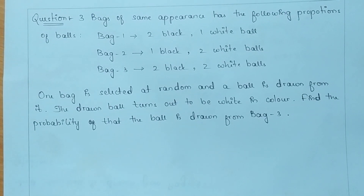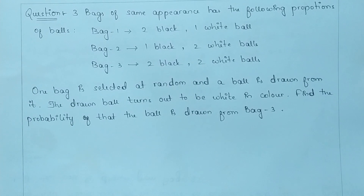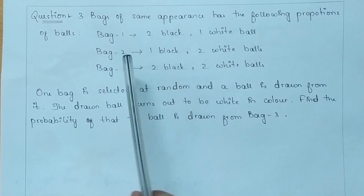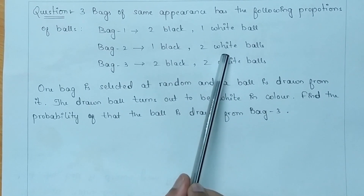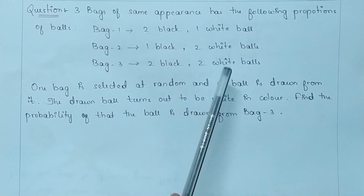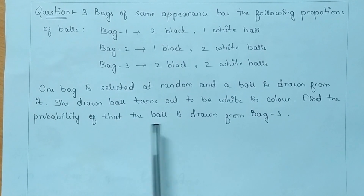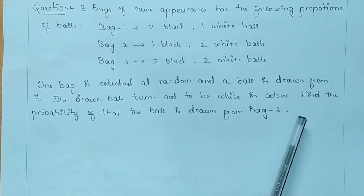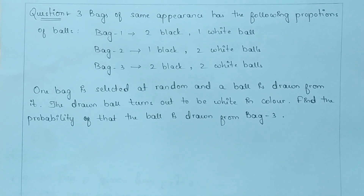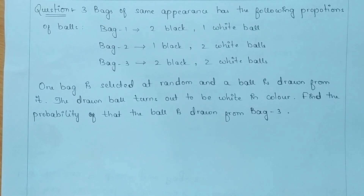In this video, let us know about a new concept. Three bags of the same appearance have the following proportions of balls: Bag 1 has two black and one white ball. Bag 2 has one black and two white balls. Bag 3 has two black and two white balls. One bag is selected at random and a ball is drawn from it. The drawn ball turns out to be white in color. Find the probability that the ball is drawn from bag 3. Let us see how to solve such questions by using Bayes' theorem.